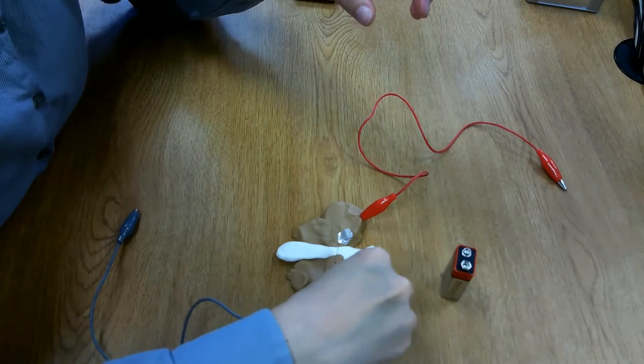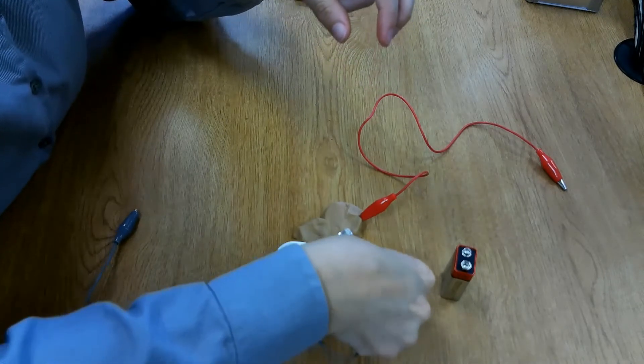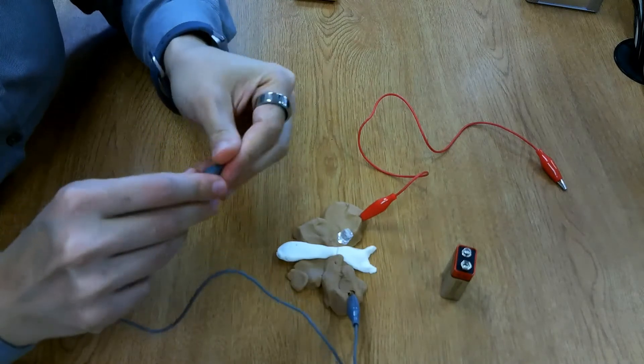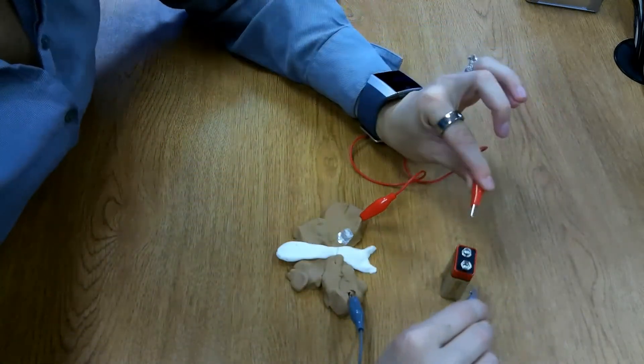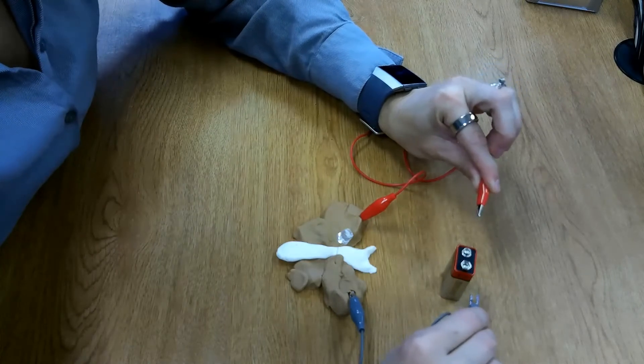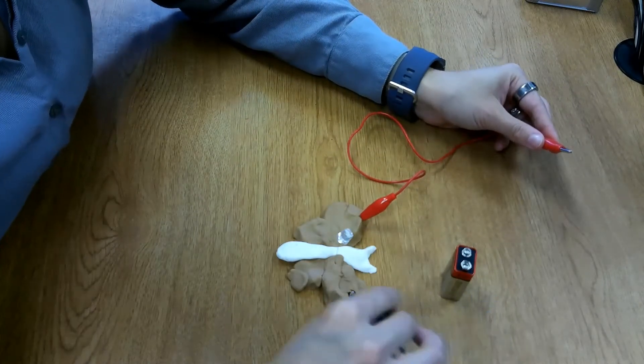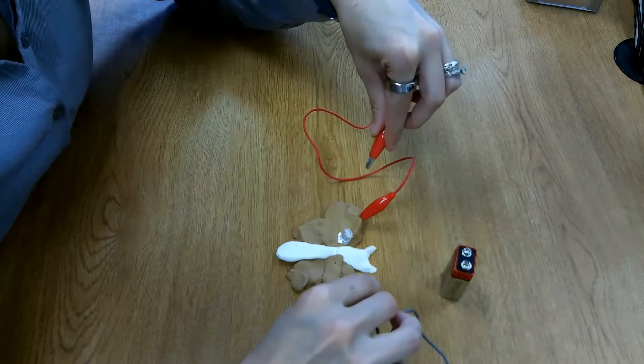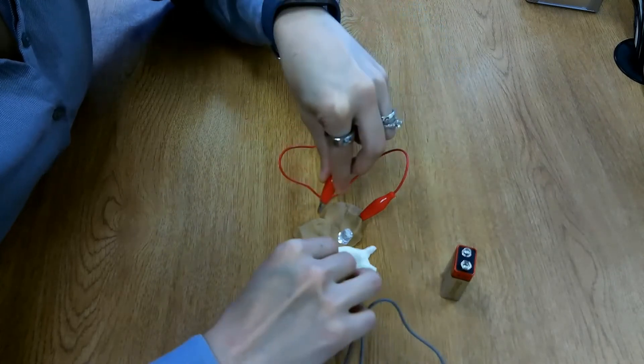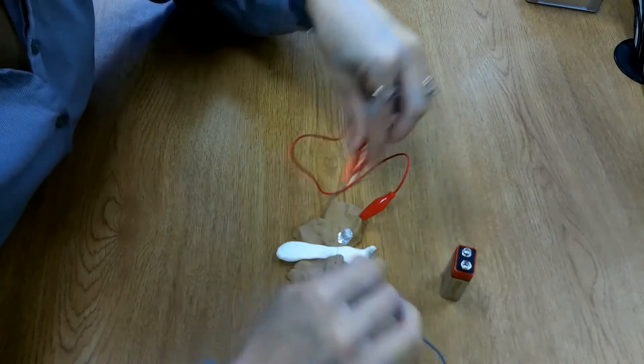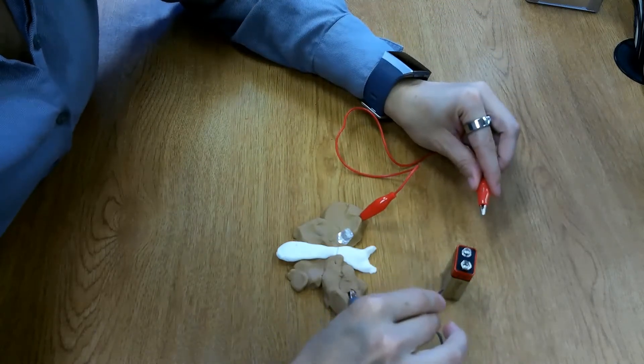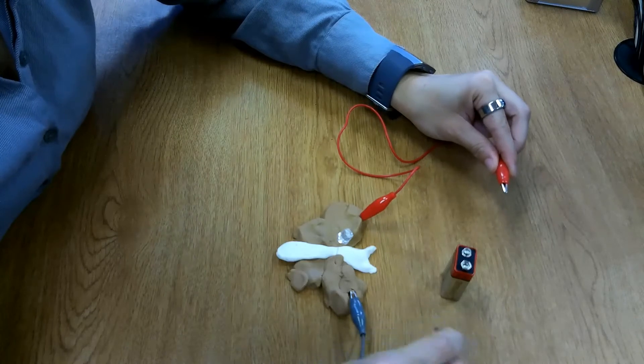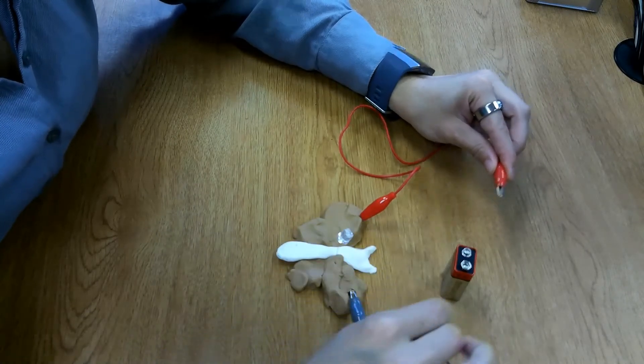I'm also going to put my gray alligator clip on my negative side, which was the shorter node of the LED. And we're going to take him and put him on the negative side of the battery. So when I attach these clips to the battery, our LED should light up, even though the alligator clips are not touching the actual LED nodes. That's because there's more voltage in the battery, so more energy is able to conduct through the playdoh.